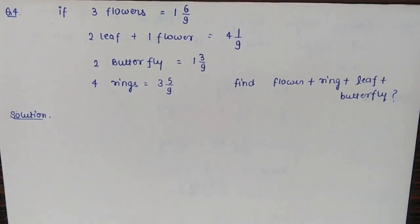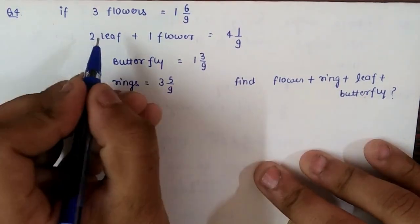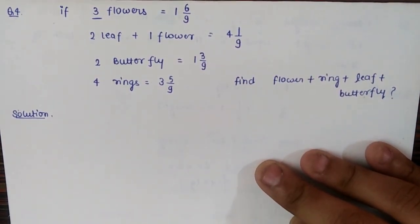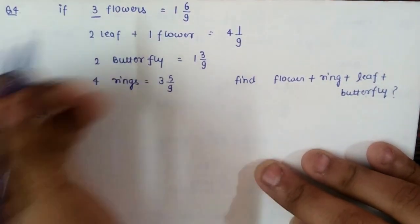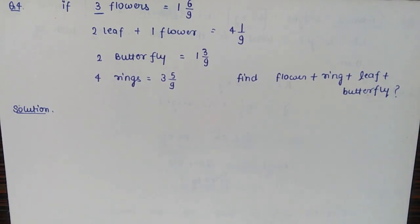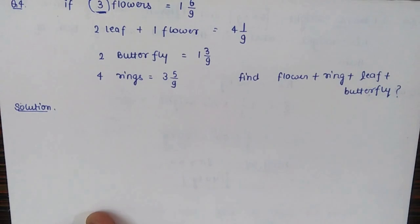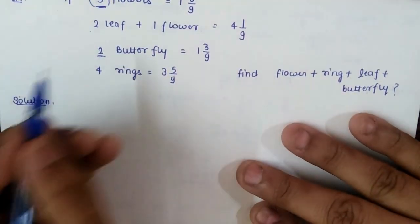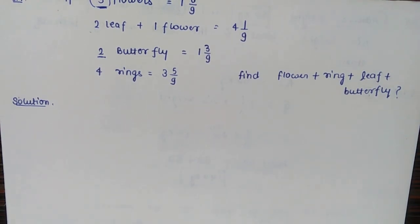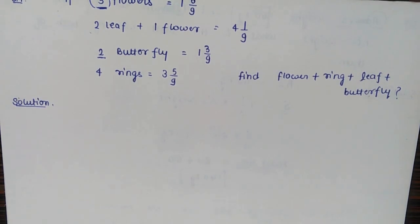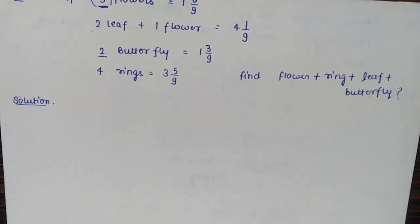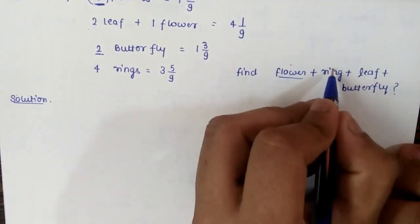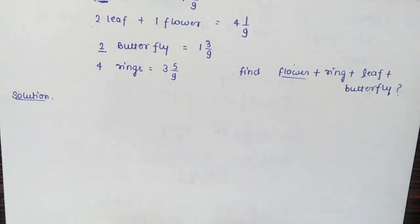Question number 4 was originally in picture form with images of flowers, leaves, and butterflies. A similar question is in one of my other videos — I'll put the link in the cards. I've converted the image problem into word form. We need to find the value of one flower, one ring, one leaf, and one butterfly.